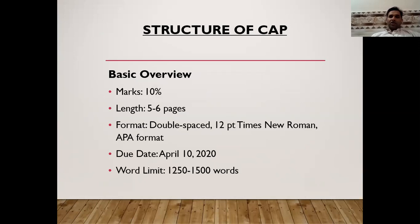Let's move on to the basic structure of CAP — the controversy analysis paper. The grading criteria is 10 percent. The length is five to six pages, double-spaced, 12-point Times New Roman, in APA format. Just follow the basic guidelines of APA format — include a citation style, follow double spacing and Times New Roman, and that's it. The deadline is April 10th and the word limit is 1,250 to 1,500 words.